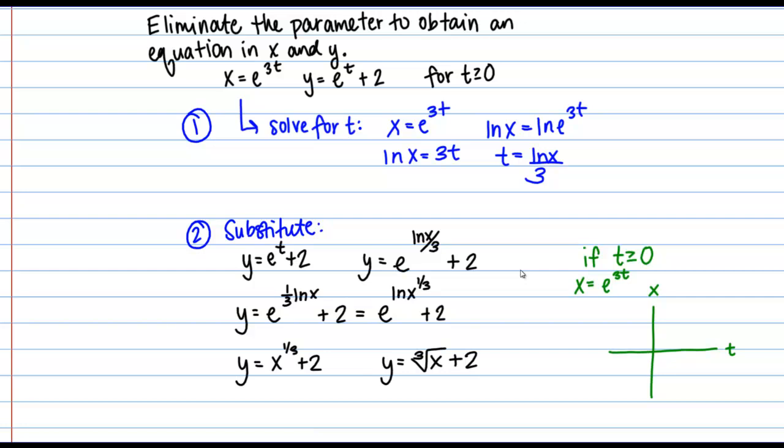at t equals 0, if I plug in 0 here, I get e to the 0, which is 1. So here's 1 and hopefully we kind of know what exponential functions look like. This is going to look something like this.